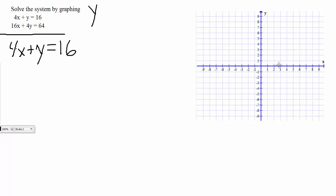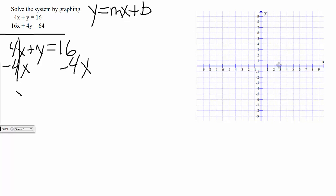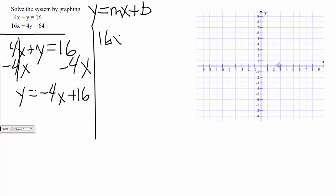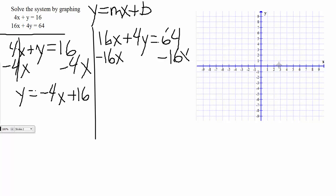We need to get this in slope-intercept form, which means we are solving for y. For this particular equation, that means we need to move the 4x over, so we subtract 4x on either side. 4x will cancel on the left, dropping down y is equal to negative 4x plus 16. Now working on the other equation, which is 16x plus 4y is equal to 64. Getting this solved for y, we need to move that 16x over — it's positive, so we subtract it. It cancels on the left, dropping down 4y is equal to negative 16x plus 64.